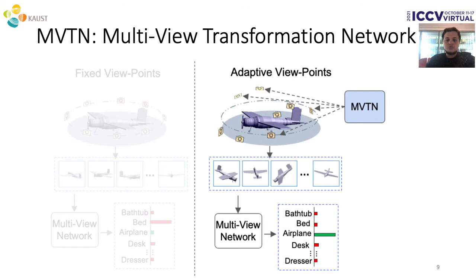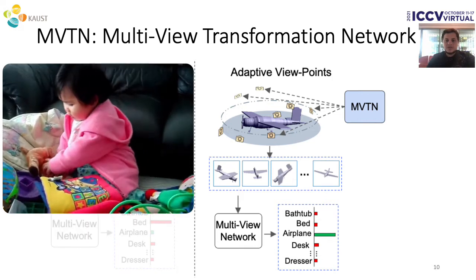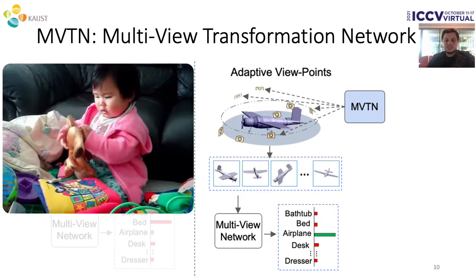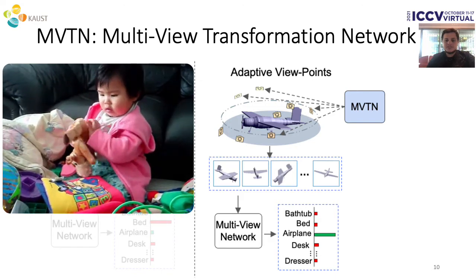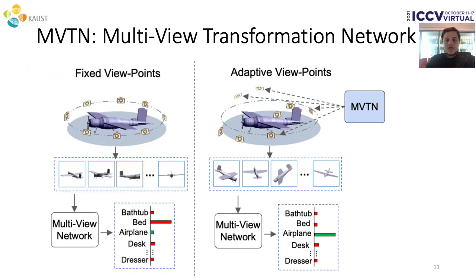We aim to do a dynamic setup relying on online rendering to enhance downstream tasks by learning to regress viewpoints adaptively for each shape. This active setup is actually how children learn about objects — by changing the viewpoints and interacting with the 3D world.